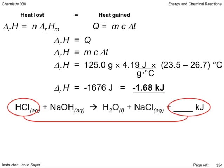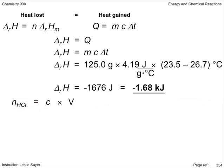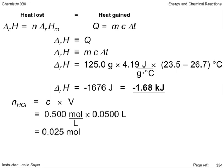So the next thing we need to do is find out exactly how many moles of hydrochloric acid was consumed in the reaction to produce the 1.68 kilojoules of energy. We use the number of moles equals the concentration of the acid multiplied by its volume formula and get 0.025 moles of acid consumed.